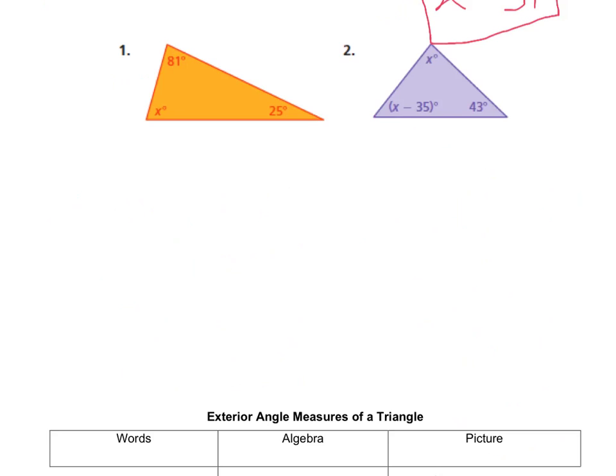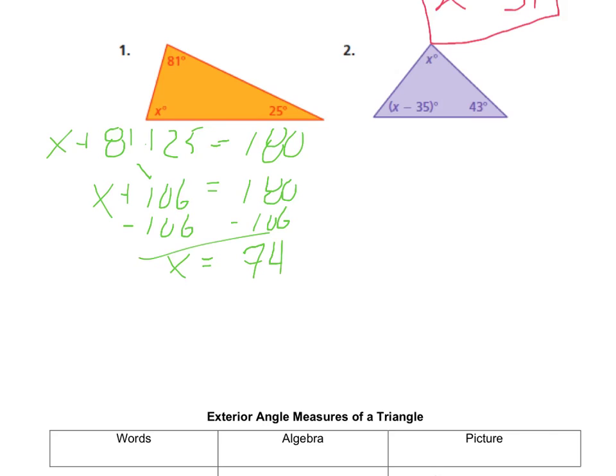Now it's your turn. Below we have two triangles, number one and number two. If you want to try these first, just hit pause on the video. When you are ready, hit go and the answers will be there. We have a triangle with three angles: X plus 81 plus 25, and all triangles add up to 180 degrees. 81 and 25 combine to get 106 degrees. Subtract 106 from both sides. 180 minus 106 is 74 degrees.